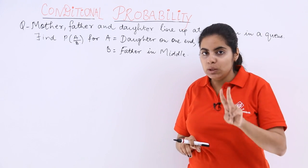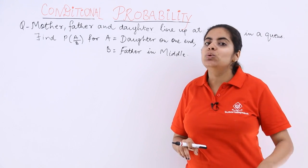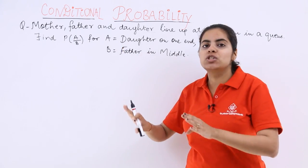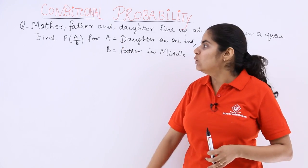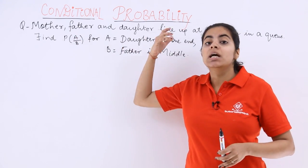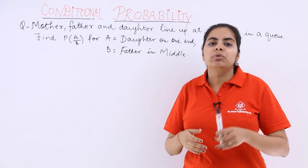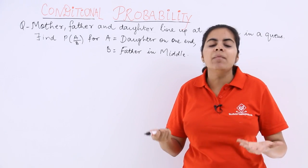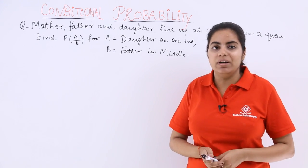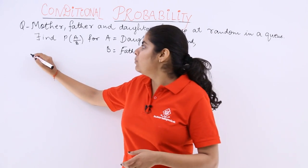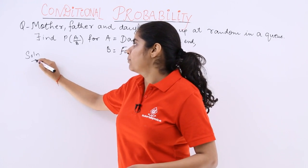So there are 2 events A and B involved. You have been given the definition of A and definition of B. You have to find P(A|B). Now what is P(A|B)? Probability of A given that B has already occurred. So let me write solution and let's go step by step.